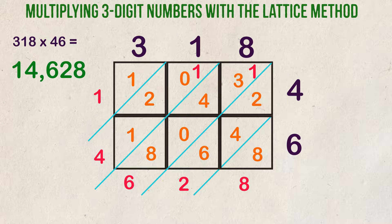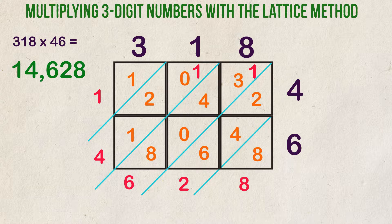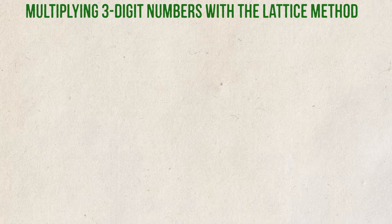Now you may be wondering if it matters if the boxes are set up as two by three or can they be set up as three by two? The answer is it doesn't really matter. Pause the video for a second. Rewrite the problem we just did as 46 times 318. See if you get the same answer. You should.